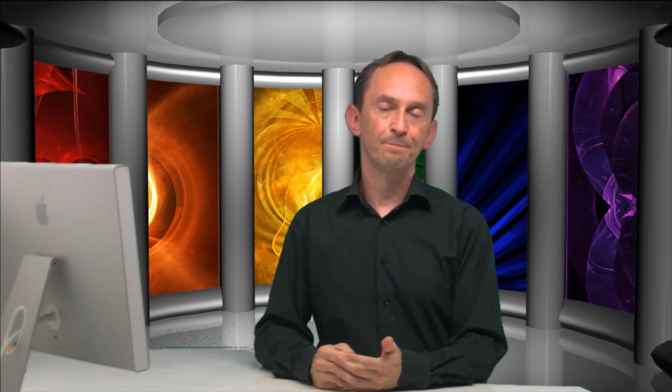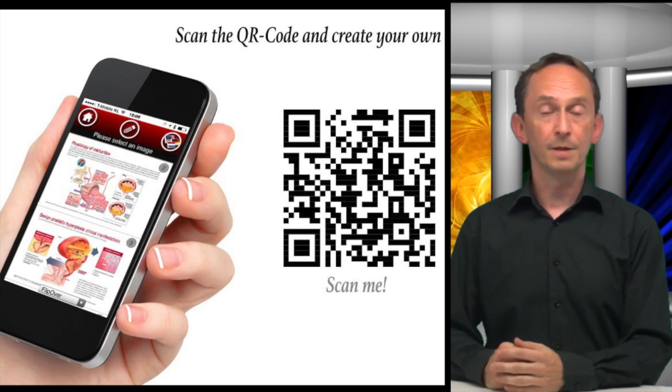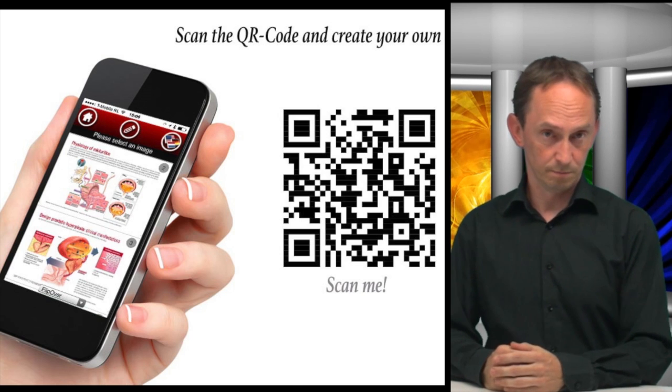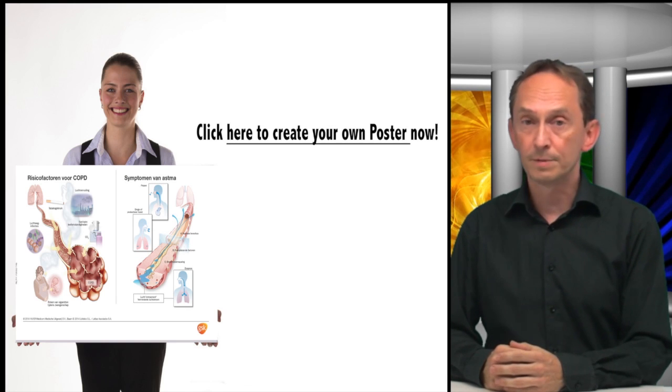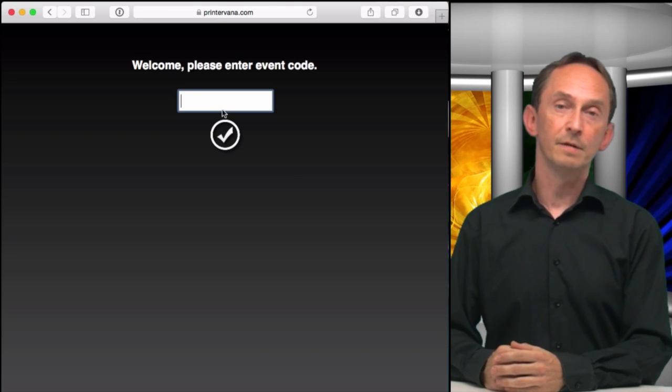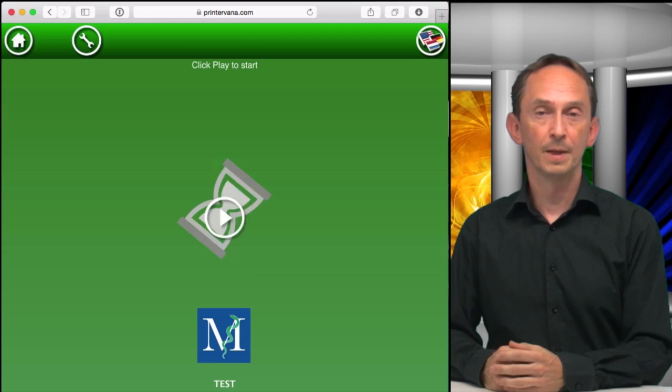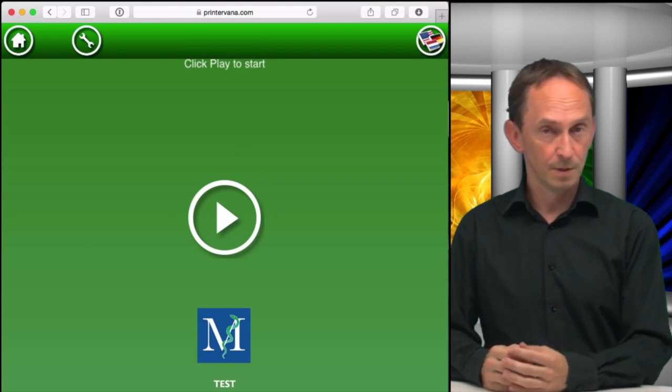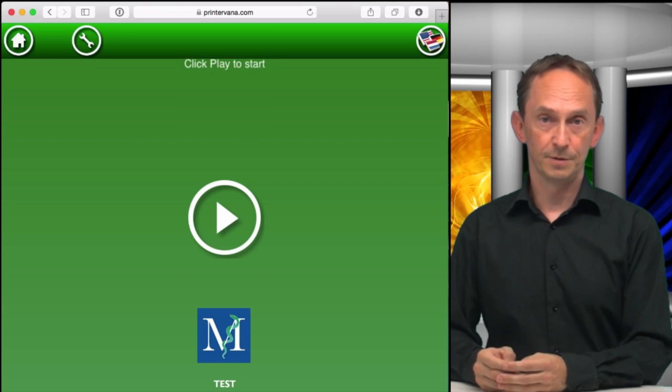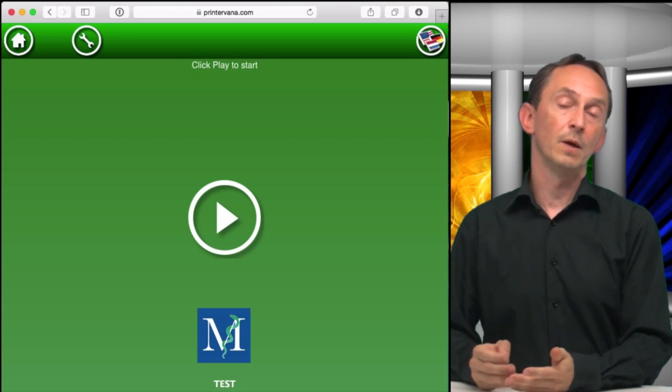Let's quickly look at how a typical customer could create something on Printavana. To start, they can either scan a QR code, click a web link in an email or on a website, or enter the event code unique to the event you host on Printavana.com. Then, they are presented with an interface in their own language with step-by-step directions on how to create the item they want.